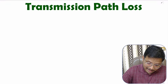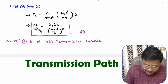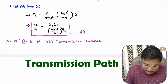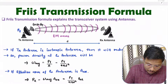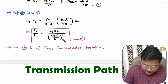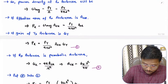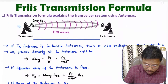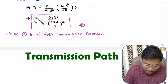In my last video, I derived the Friis transmission formula: PR by PT, where PR is the received power by antenna and PT is the transmitted power by antenna. So PR by PT equals GT times GR divided by (4πD/λ) whole square. Here GT is the gain of the transmitting antenna, GR is the gain of the receiving antenna, D is the distance between transmitting and receiving antenna, and λ is the wavelength of the transmitted EM wave.